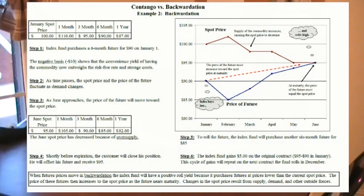Let's look at an example of backwardation. Backwardation typically occurs on inverted futures curves. In this example, the index fund purchases a six-month future for $90 in January. The negative basis shows the convenience yield of having the commodity now outweighs the risk-free rate and storage costs. Just like in the contango situation, as time passes, the spot price and the price of the future will fluctuate as supply and demand change. However, as June approaches, the price of the future moves toward the spot price. The new June spot price is $95, so shortly before expiration the customer closes his position and offsets his future, receiving $95. The index fund gained $5 on the original contract — the $95 received minus the $90 paid in January.